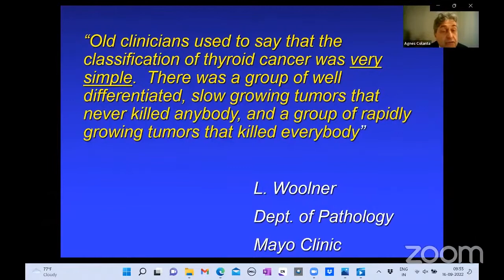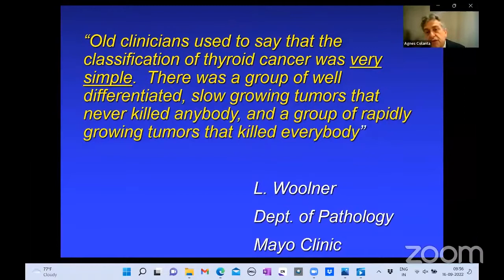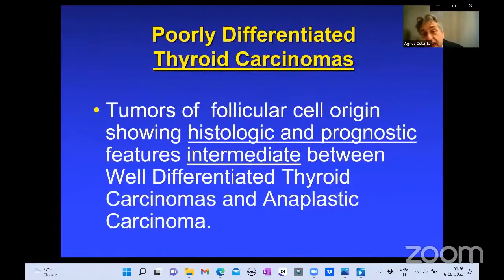Now let's jump to thyroid carcinoma with intermediate prognosis. An old clinician, Dr. Walden — a pathologist at the Mayo Clinic — said the old clinician used to think thyroid cancer classification was simple: a group of well-differentiated, slow-growing tumors that never killed anybody, and a group of rapidly growing tumors that killed everybody. Dr. Rosai used to tell us that when he was interested in thyroid at Washington University in St. Louis, a surgeon made fun of him saying there's nothing interesting about thyroid — tumors either don't kill anybody or kill everybody. Well, that surgeon was wrong.